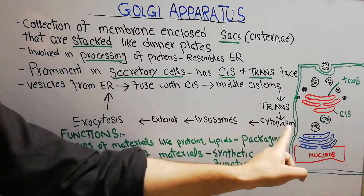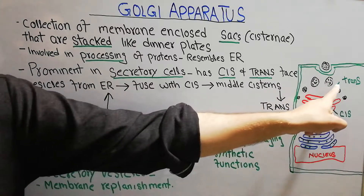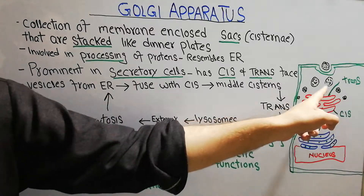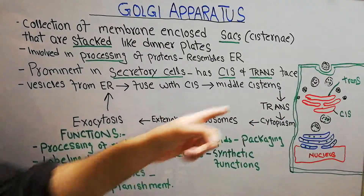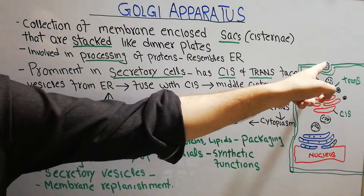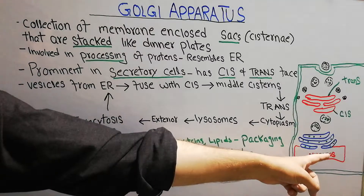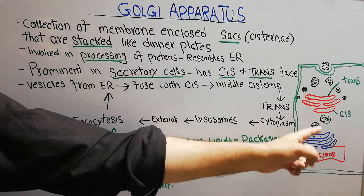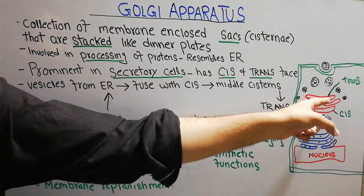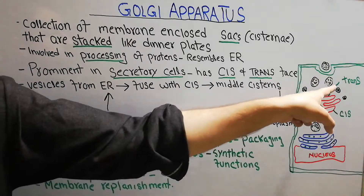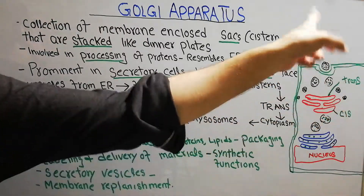From the trans phase there may be different paths for all the processed proteins. The vesicles released through the trans phase of the Golgi apparatus may enter the cytoplasm, they may form lysosomes, or they may go outside the cell to the exterior through exocytosis. So the nucleus commands the endoplasmic reticulum, the ER forms proteins, proteins are transferred to the Golgi apparatus, processed, and then sent to the cytoplasm, lysosomes, or released outside.